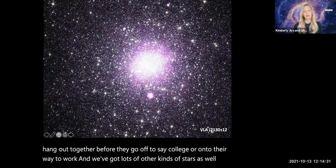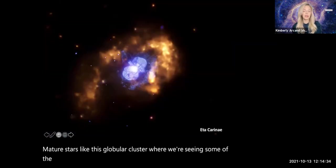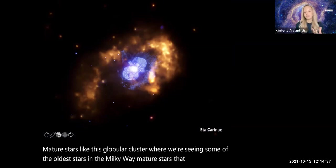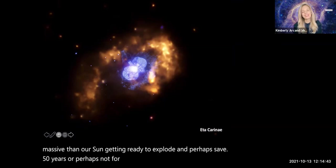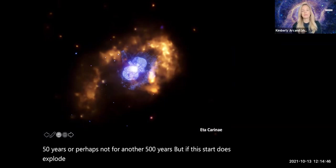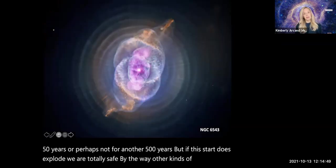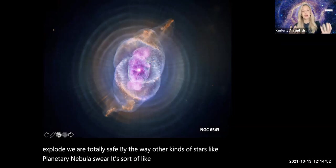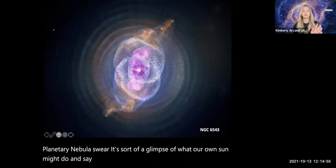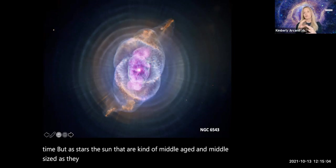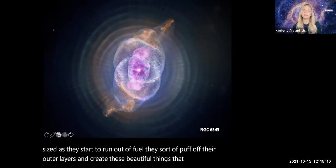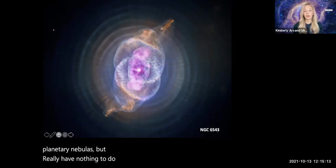We've got lots of other kinds of stars as well. Mature stars, like this globular cluster where we're seeing some of the oldest stars in the Milky Way. Mature stars that are much more massive than our sun getting ready to explode in perhaps 50 years or perhaps not for another 500 years. Other kinds of stars like planetary nebulas, where it's sort of like a glimpse of what our own sun might do in say 4 billion years.